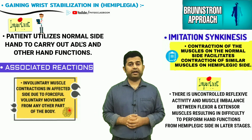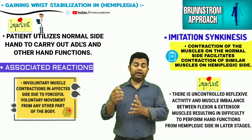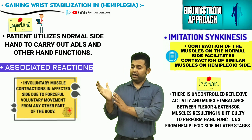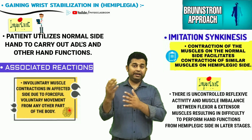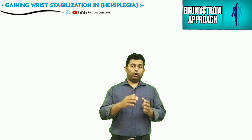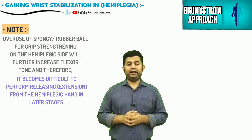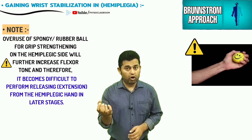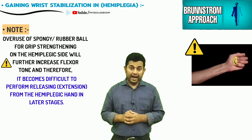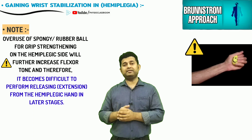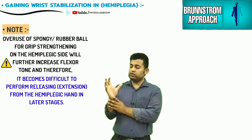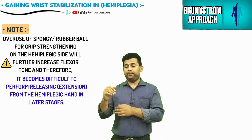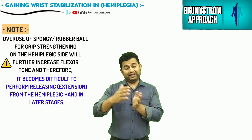It is recommended that the physiotherapist focus on training alternate movements — both closing and opening activities — so that hand flexor tone does not become uncontrolled and interfere with releasing activities. Excessive or indiscriminate use of rubber or spongy balls for grip strengthening should be discouraged, as it only creates further imbalance between flexor and extensor muscles, making it more difficult to develop volitional finger extension movements at later stages.